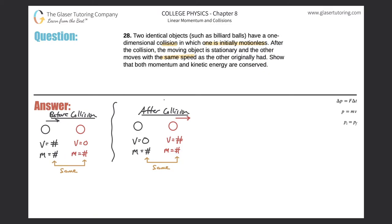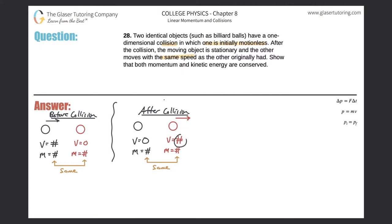After the collision, the ball that was originally in motion is now motionless — its velocity is zero. The red ball obtains that same velocity, because the problem says "same speed." So it obtains the same velocity as the black ball had before the collision. The masses of both objects are still the same.